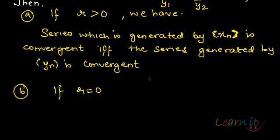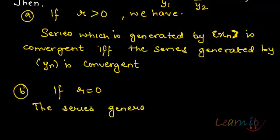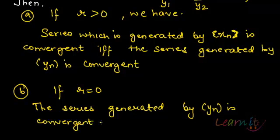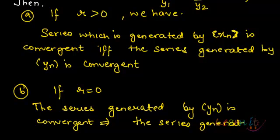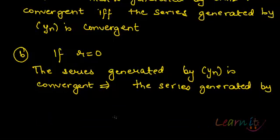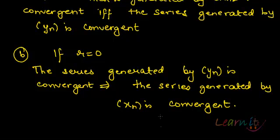But the same biconditional does not hold when r equals zero. If r equals zero, then in case the series generated by yn is convergent, the series generated by xn will be convergent. So it is only a one-directional implication.